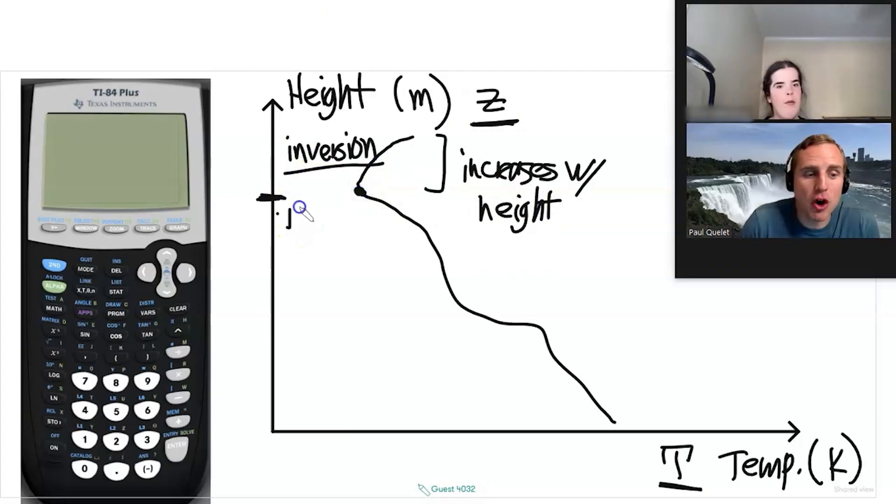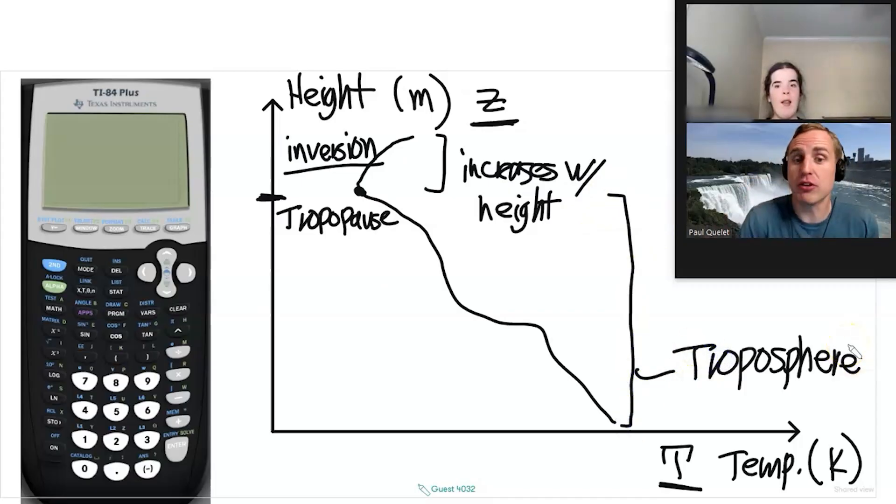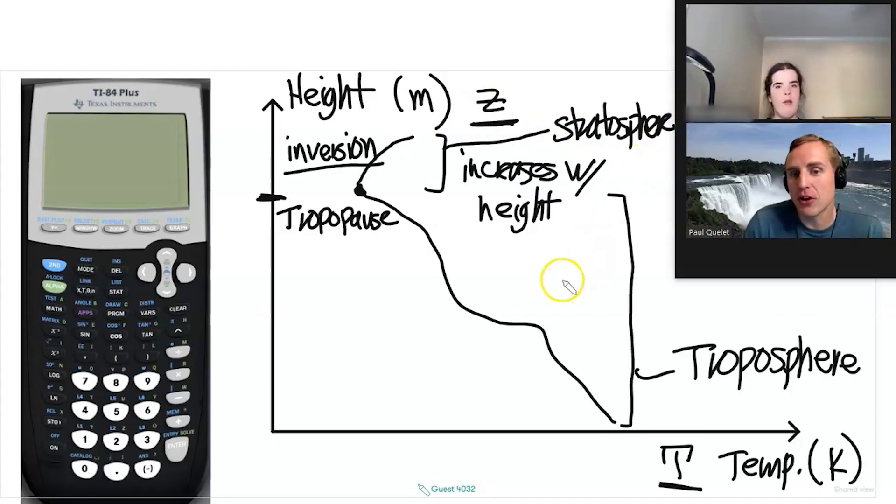At this point right here, we would call this the tropopause because that's where the troposphere pauses, where the troposphere stops. This layer here would be called the troposphere, correct? Because that's where the temperature decreases with height. But then when the temperature increases with height, that's an inversion. Think about what the word invert means. Invert means to do the opposite of what you expect. So instead of the temperature decreasing with height, it's actually increasing with height. And this would no longer be the troposphere. It'd be called the stratosphere. Does that sound familiar?